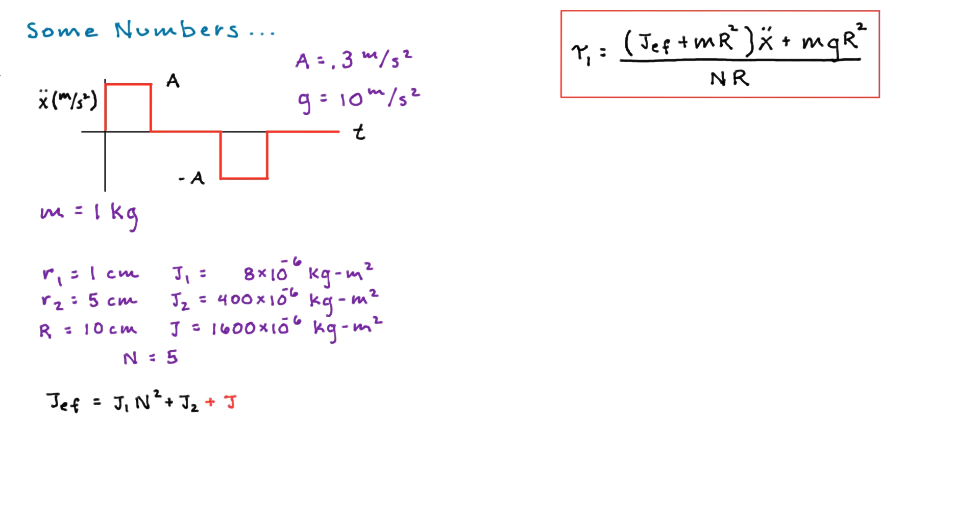Now let's calculate some of the quantities. So here's the effect of inertia. Let's look at those terms. The j1 n squared plus j2 is 600 times 10 to the negative 6. And the capital J is 1600 times 10 to the negative 6. So we can't really throw either of those two terms out. They're both relevant. Sometimes you can neglect a term here or there, but in this case we can't.